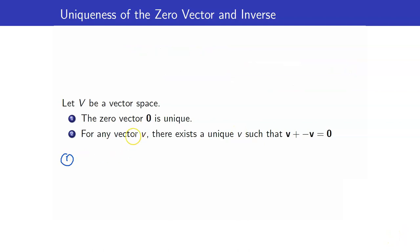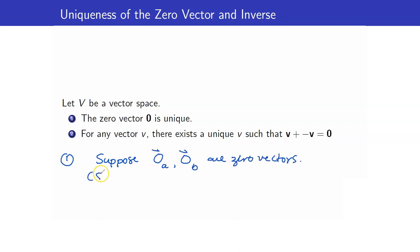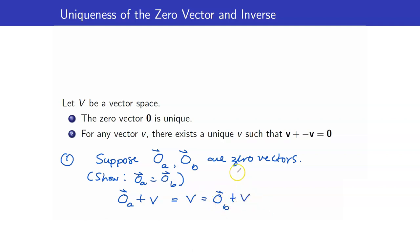Let me prove the uniqueness of the 0 vector. Suppose there are two 0 vectors; I will call them 0a and 0b to differentiate the two, and I want to show they must be the same. Since 0a and 0b are both 0 vectors, we have 0a plus v equals v. However, I can also write v as 0b plus v, because 0b is also a 0 vector. So 0a plus v equals 0b plus v. From our cancellation theorem, I can cancel v, and therefore 0a equals 0b. This proves that the 0 vector must be unique.